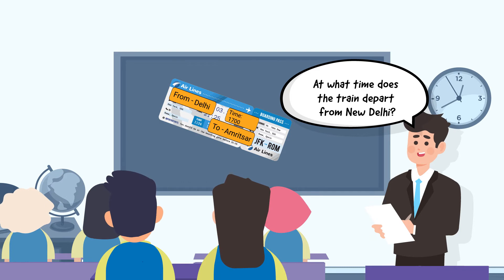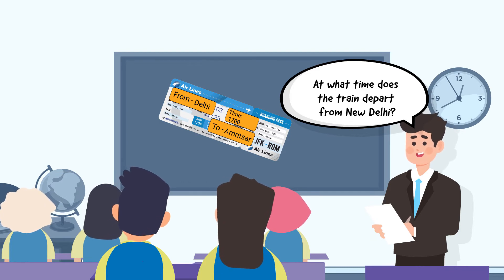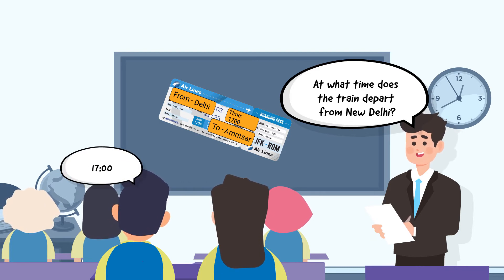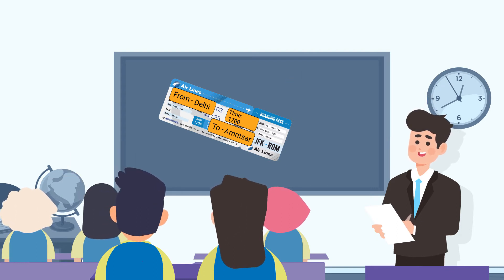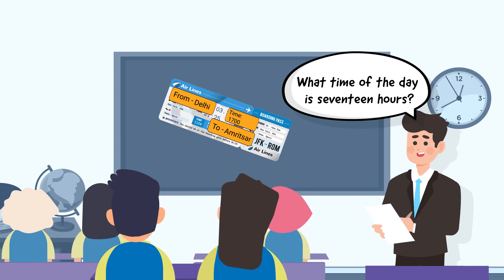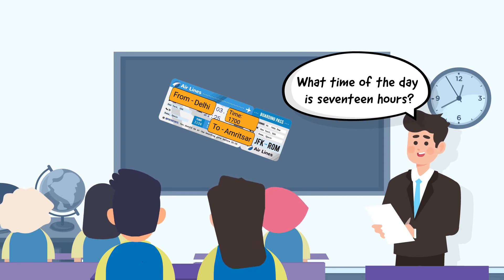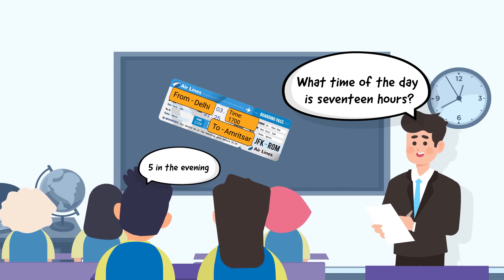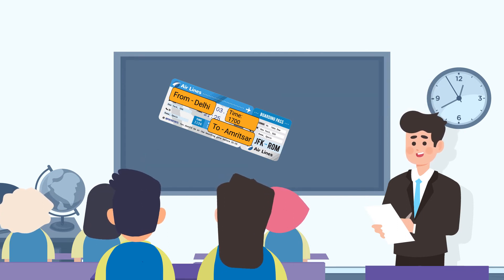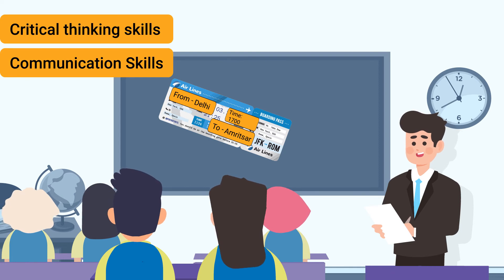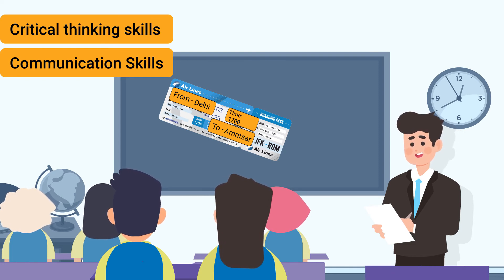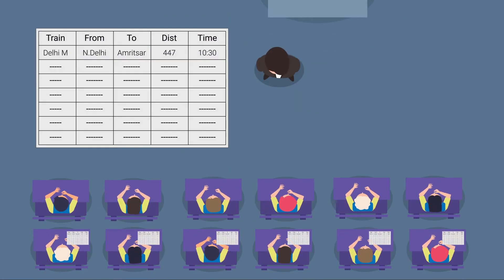Possible responses will be 1700 hours, as it is printed on the ticket. Then question the students: what time of the day is 1700 hours? A possible response would be five in the evening. Responding to questions like these will enhance students' critical thinking and effective communication skills.